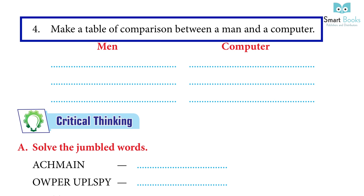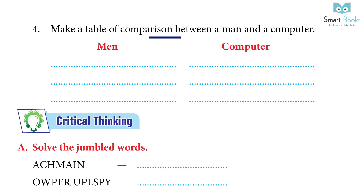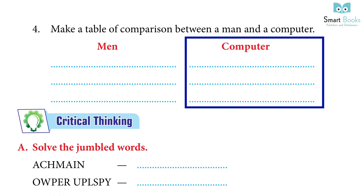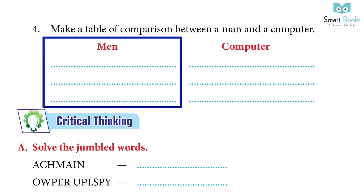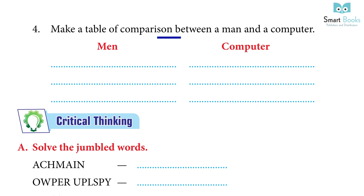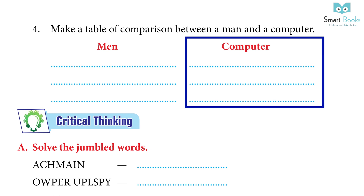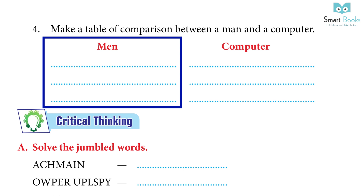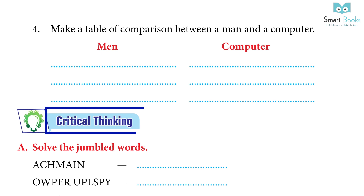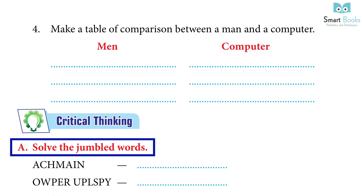Question 4: make a table of comparison between a man and a computer. A man has to take a break after working for a while; a computer never gets tired even after working for long hours. Man is slower than a computer at work; a computer finishes difficult tasks in seconds. A man is capable of errors; a computer is 100% error free. A man does not always need instructions; a computer always needs a set of instructions to do tasks.